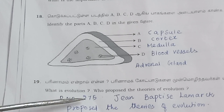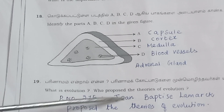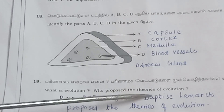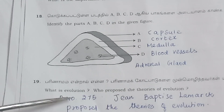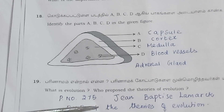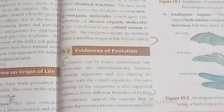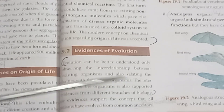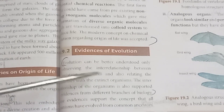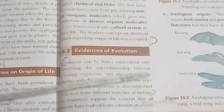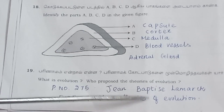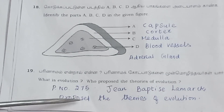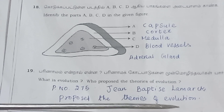Question 19 (continued): What is evolution? Who proposed the theories of evolution? Refer to page number 275. Evolution covers different branches of biology. Jean Baptiste Lamarck proposed the theories of evolution.